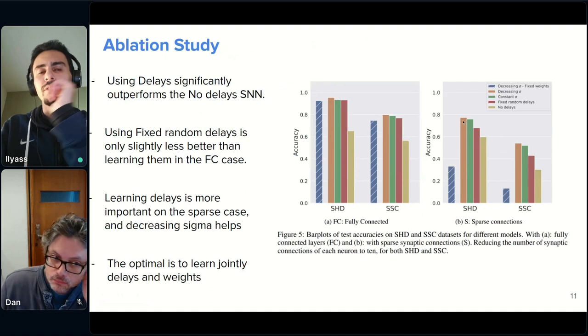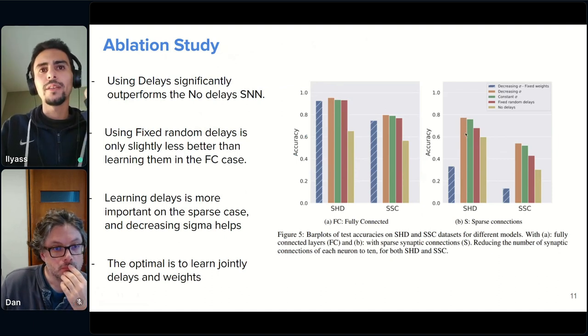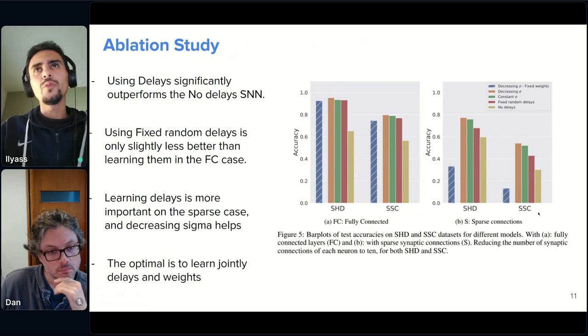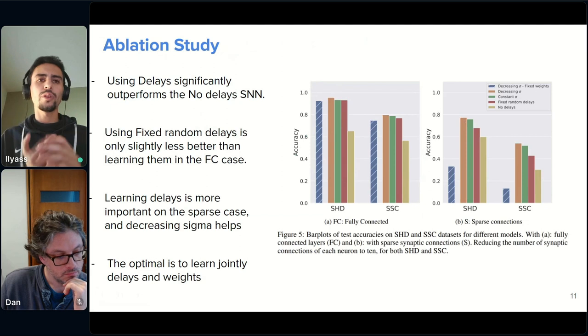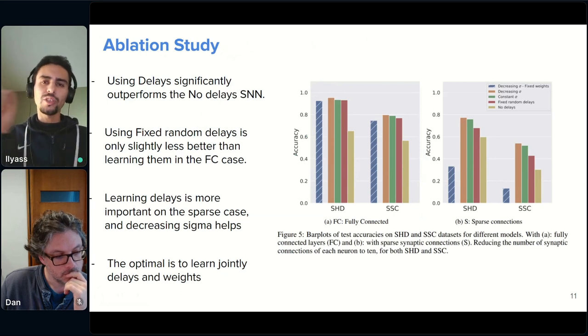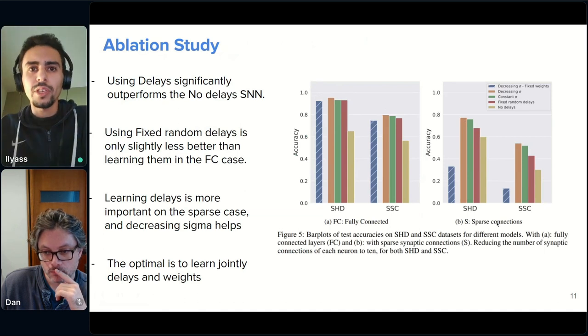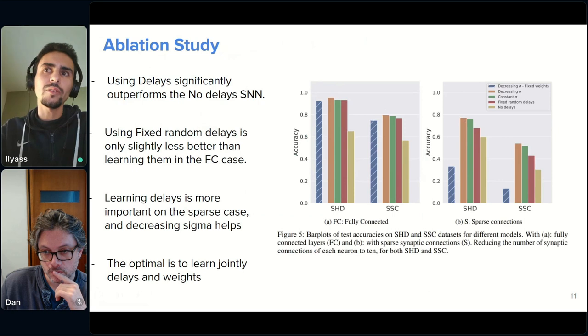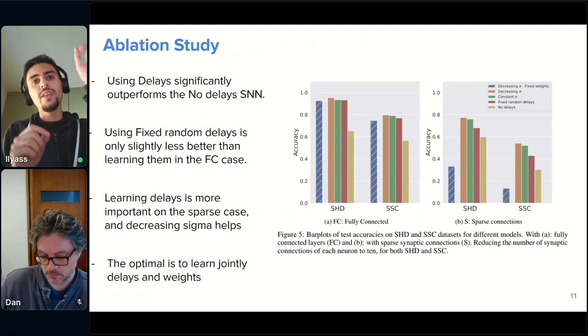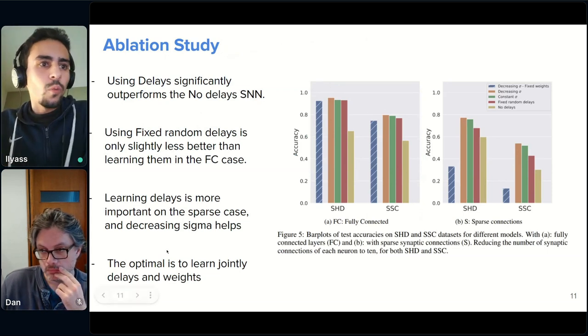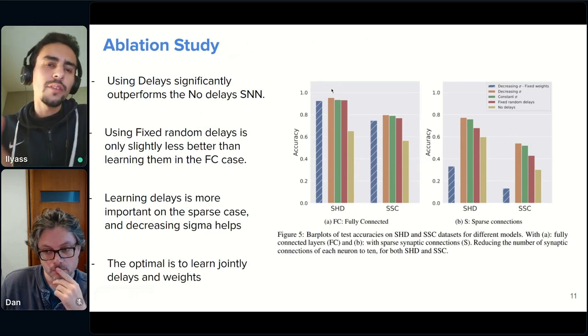And also learning the delays only while keeping the synaptic weights frozen leads to a very good performance. And it's better than a standard SNN without delays, at least in the fully connected case. If we go to the sparse connections case, here we see that there is a big difference between learning jointly the delays and the synaptic weights. And leaving the delays fixed, which now it's getting closer to the standard SNN. Why we think is this, we argue that if you have a dense feedforward network, the randomly generated delays will kind of cover all the possibilities. So adjusting the weights a little bit might lead to a good performance, but in the case of very sparse connections, where we mask a lot of synaptic connections, we will have a very small set of initial delays and moving them becomes actually really crucial to obtain good performance.